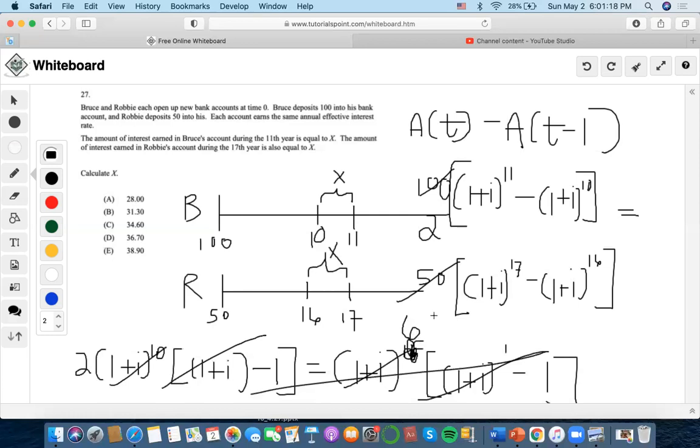We'll bring the 6th power to the other side by taking 2 to the 1/6. Using the calculator, 2^(1/6) equals 1.12246. Since we have 1 plus i, we subtract 1 and get i equals 0.122462.